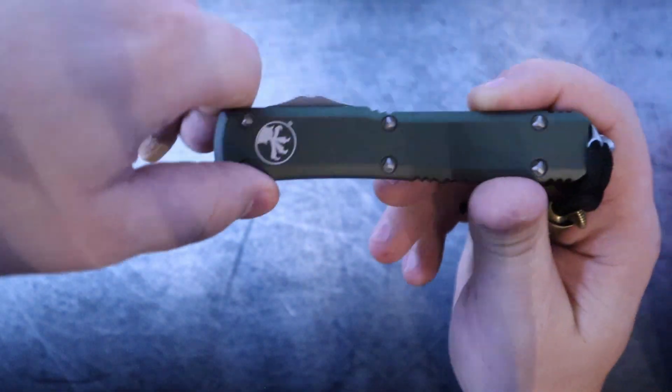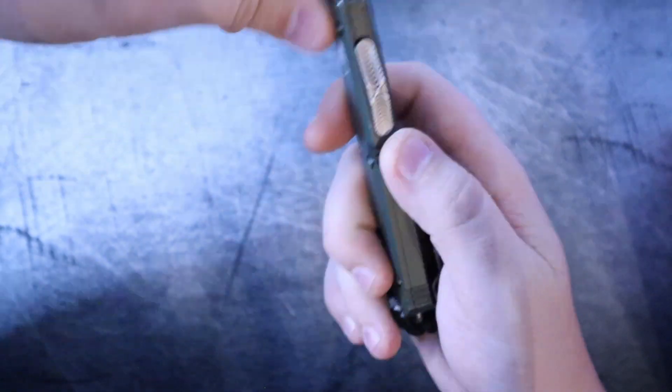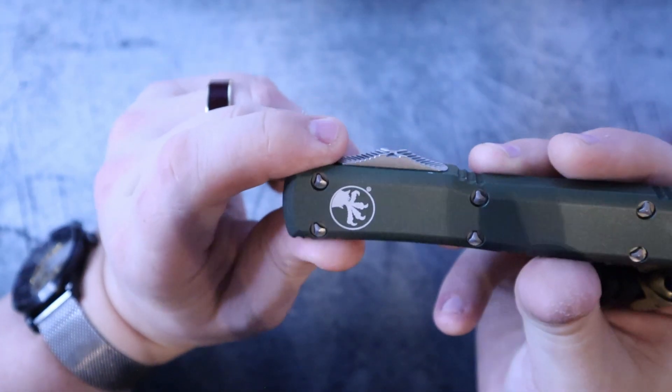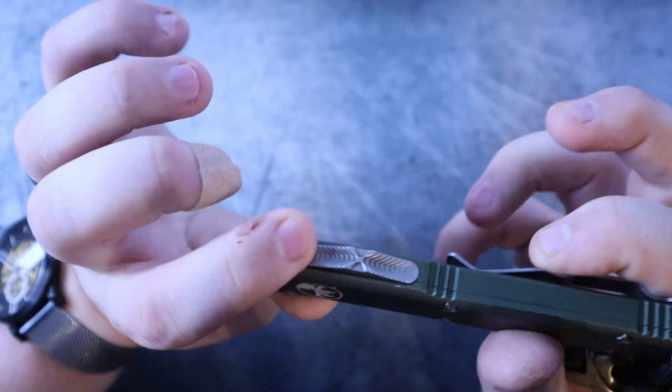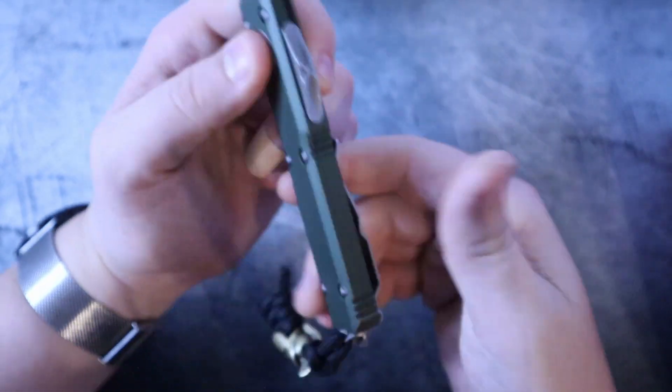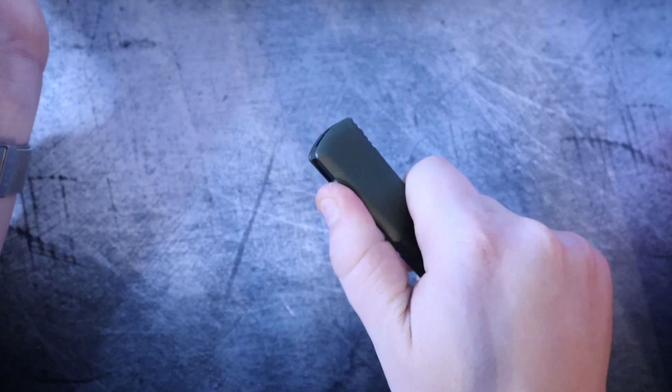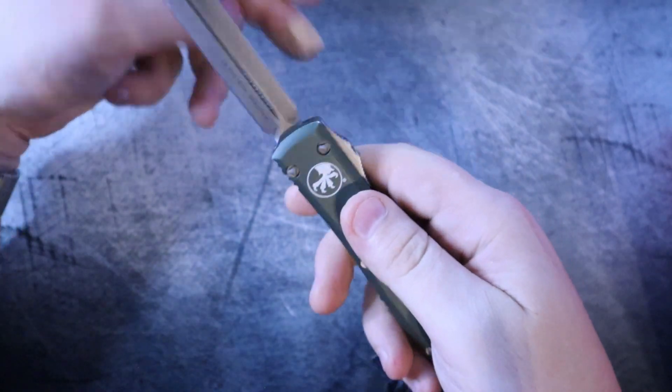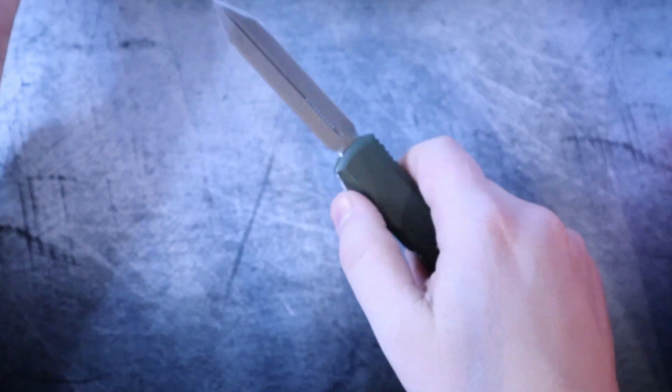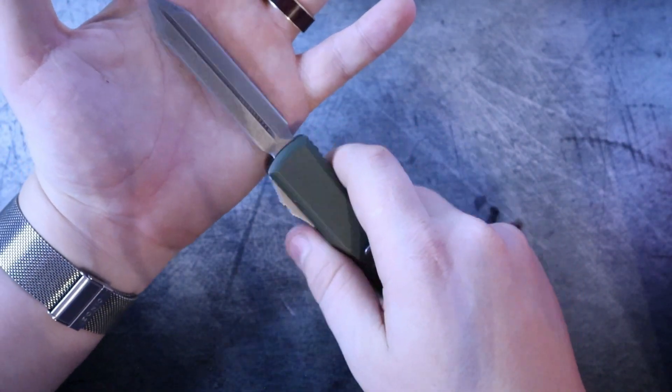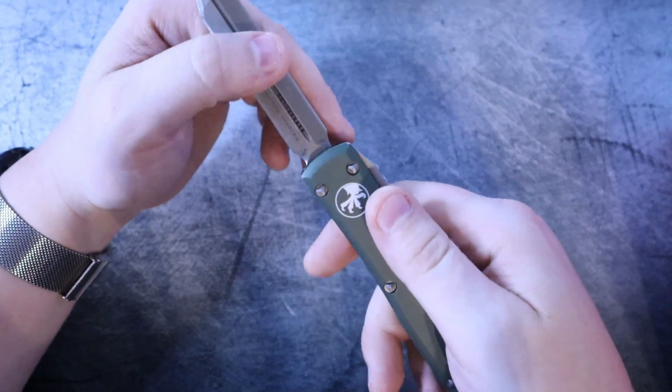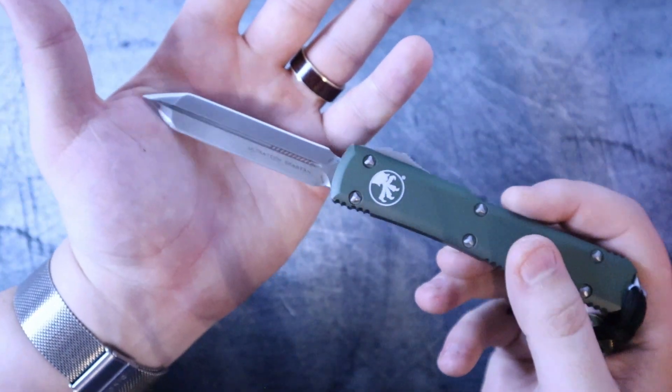Also, and I know that someone's gonna be like, well, other OTFs have these features too. You know, they were the first to really come up with what Blade HQ had termed and coined the podium jimping, which I think is a lame term. But you know what? They caught on to something there. Their buttons are super friendly as far as deployment, retraction, and it's a double action OTF, meaning that you can open and close it one hand.